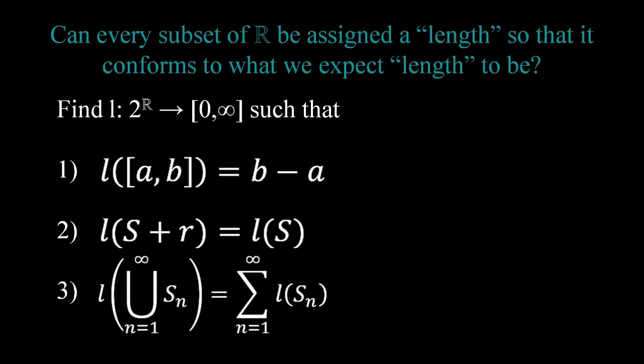The last condition is called countable additivity. It means that if we have finite or countably infinitely many subsets which are disjoint, the length of them put together is simply the sum of their individual lengths.